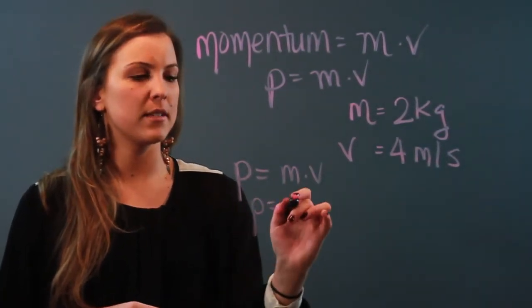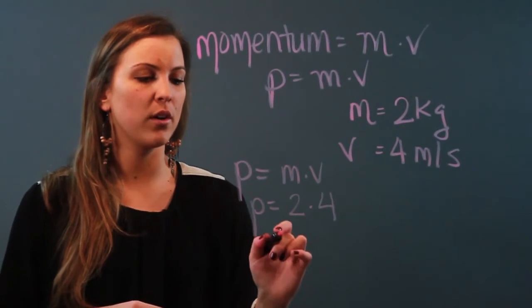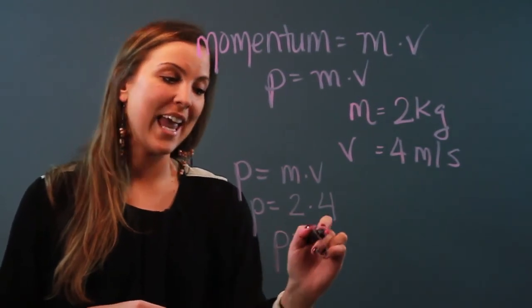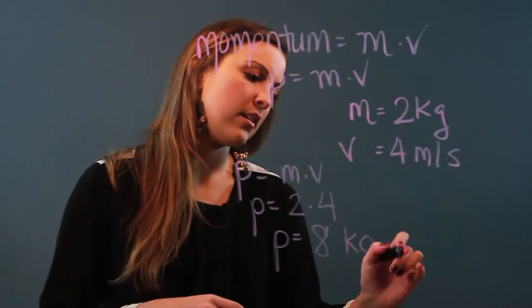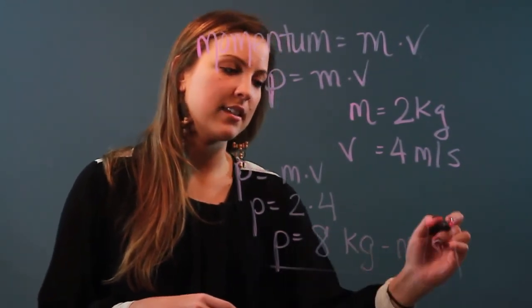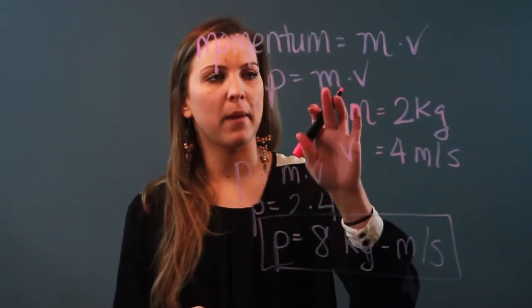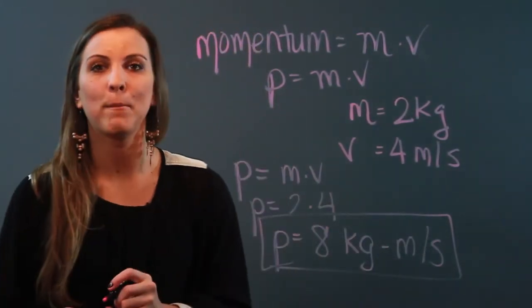Your momentum is equal to two times four, so your momentum is eight, but it's written as eight kilograms meters per second. So when you multiply your mass and your velocity, you will get your momentum.